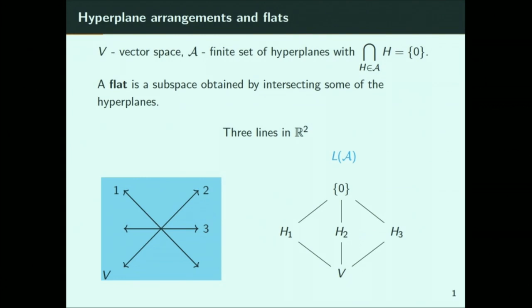I want to tell you about something called the top-heavy conjecture, which says that if I have one of these lattices of flats, then if I draw an imaginary horizontal line through the middle of it, and I start at the top and go down some number of levels, and start at the bottom and go up the same number of levels without crossing that line, then there will be more flats on the upper level than on the lower one. That's what the top-heavy conjecture says.